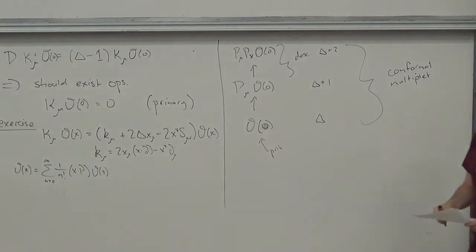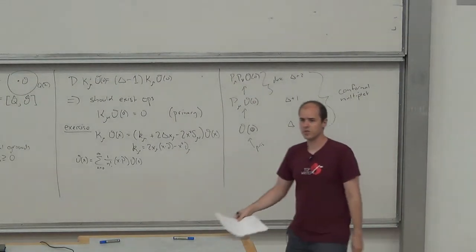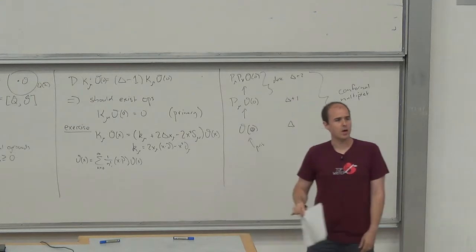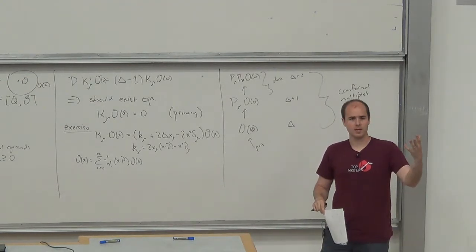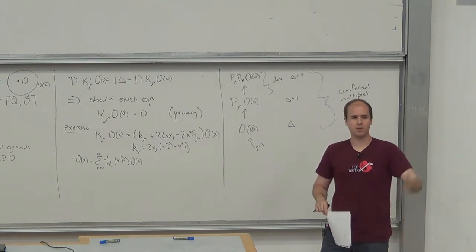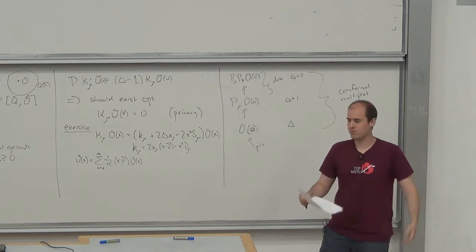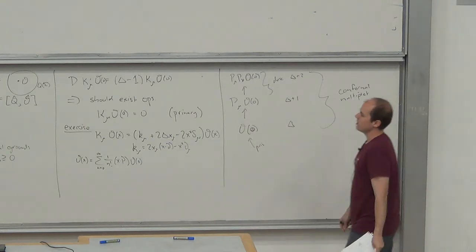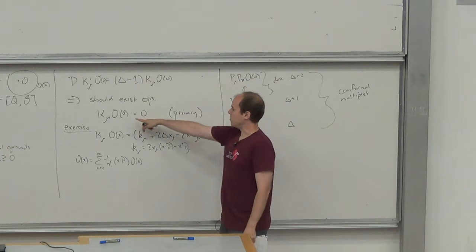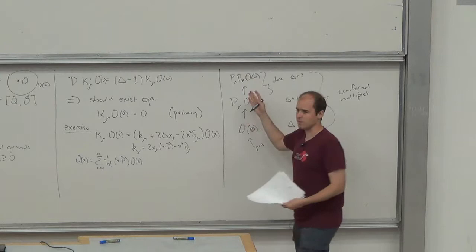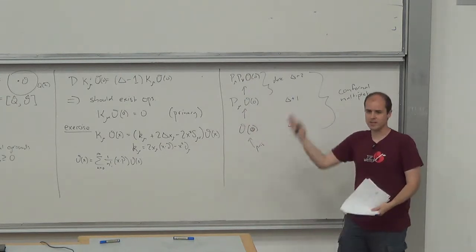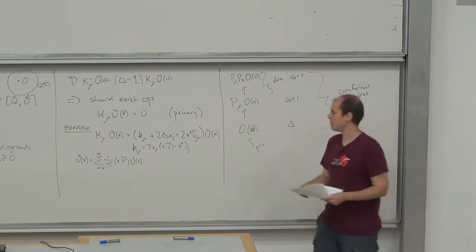This should remind you of the construction of irreducible representations of SU(2). We start with a highest weight state annihilated by the raising operator, then act with lowering operators to generate the whole multiplet. Here it's exactly the same, except the primary is the lowest weight state with respect to dimension, and the momentum generators play the role of raising operators.